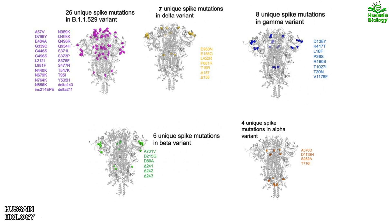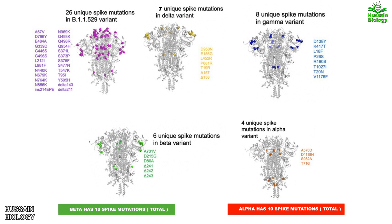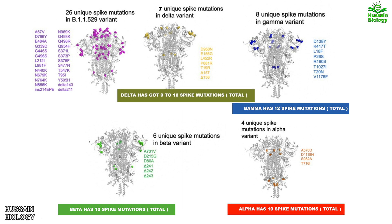If we look at all mutations present on the spike protein across all variants, the Alpha variant has 10 spike mutations and the Beta variant also has 10. The Gamma variant has 12 spike mutations, while the Delta variant has 9. The latest variant of concern, Omicron, has a plethora of mutations — more than 30-plus mutations on the spike protein.